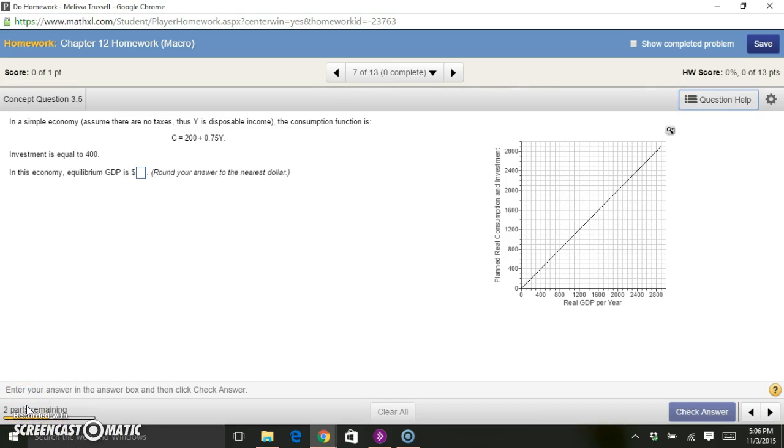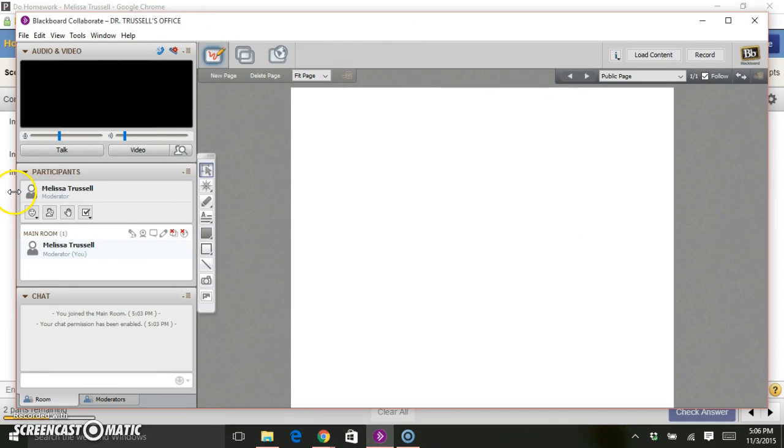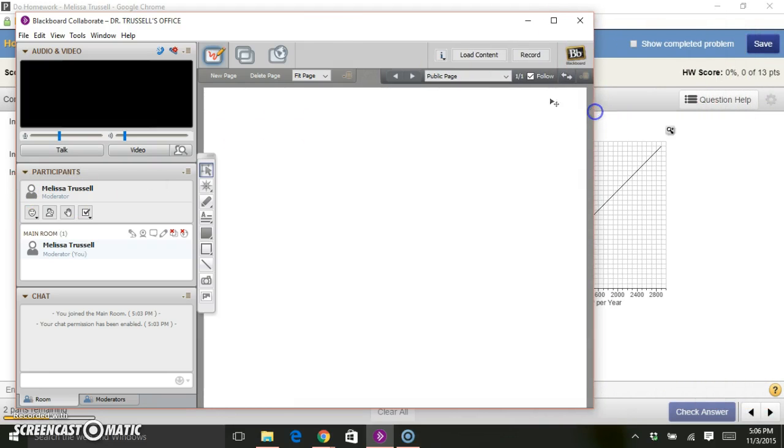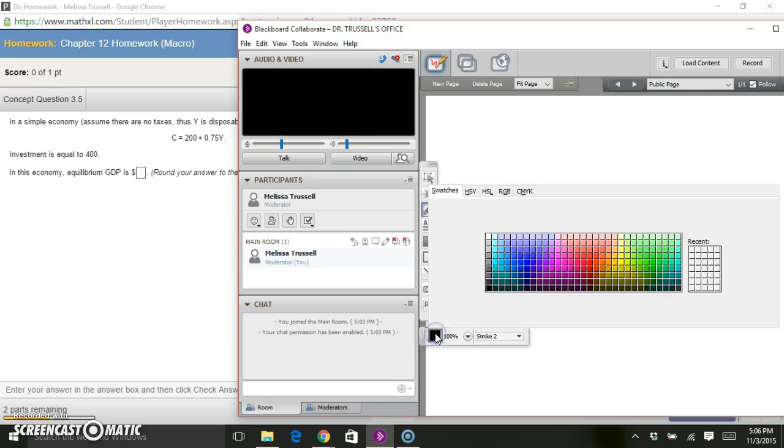We know that the equilibrium GDP for a simple economy is the level at which GDP equals consumption plus investment. So let me pull up my little whiteboard here and see if I can minimize it so we can see both at the same time. There we go, a little bit smaller.